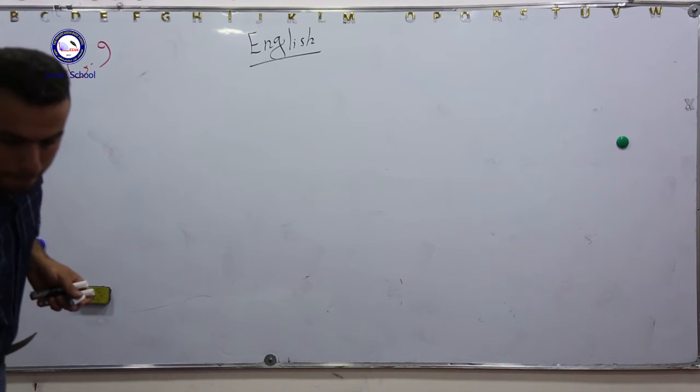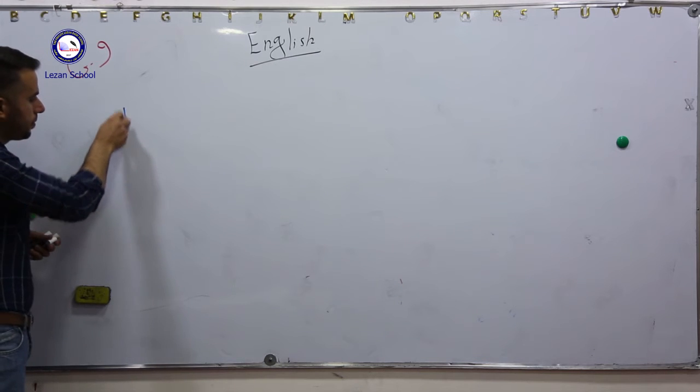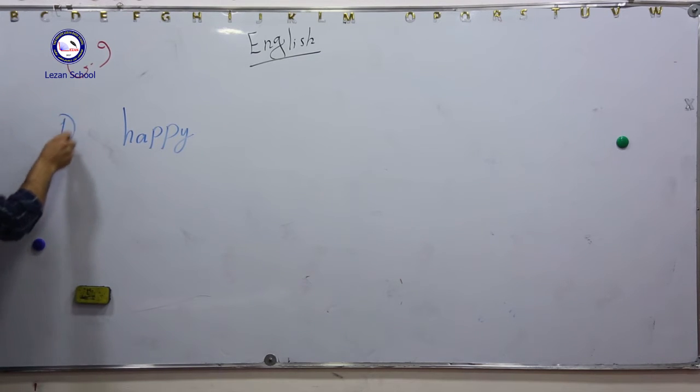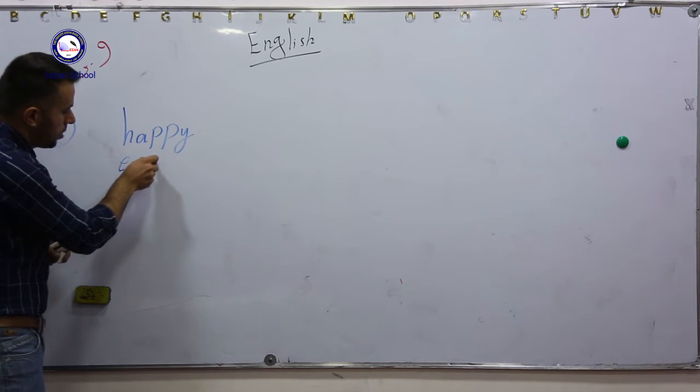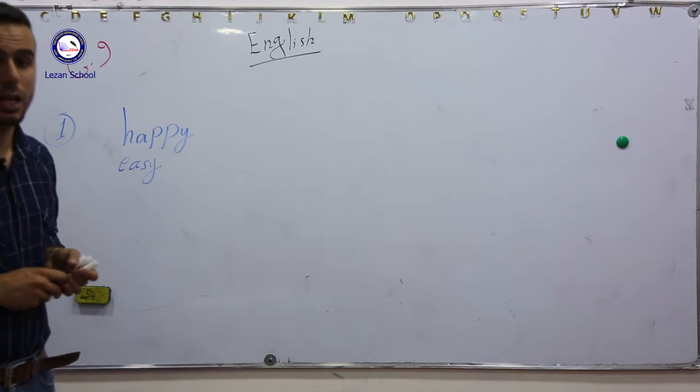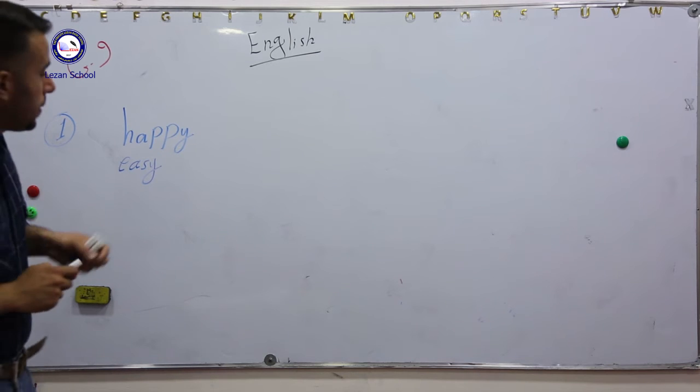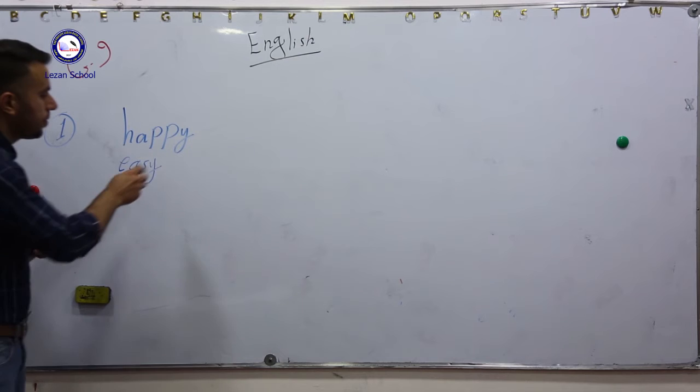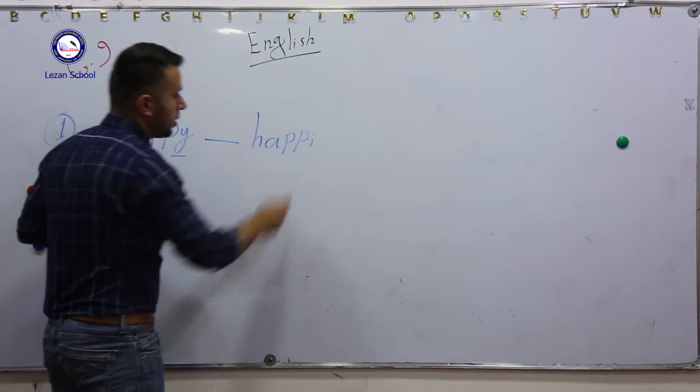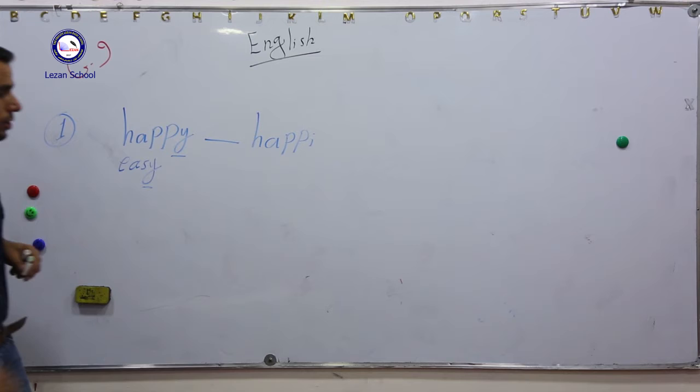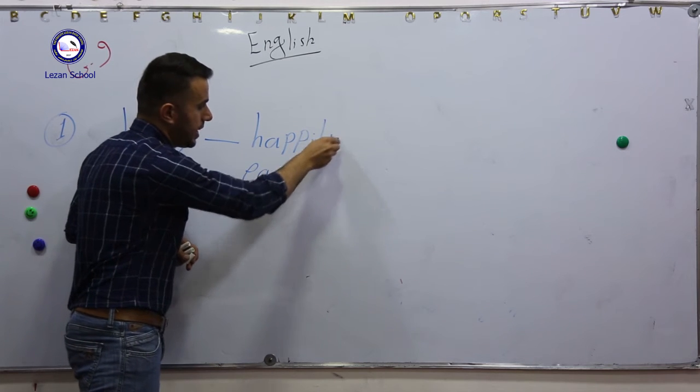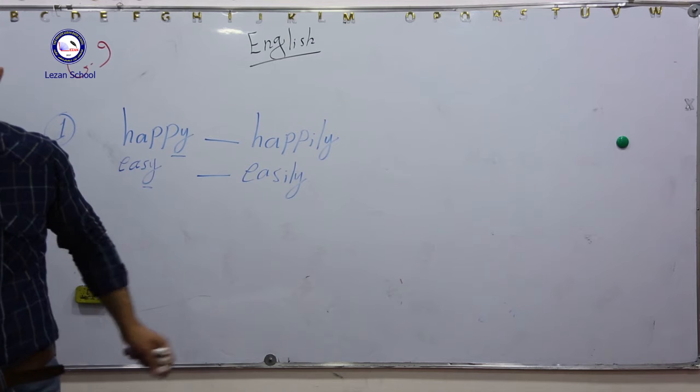Group number one: happy, easy. If you want to change an adjective into an adverb, we have to add ly. If the adjective ends with y, we have to change y into i, then add ly. Happy becomes happily. Easy becomes easily. This is an adverb.